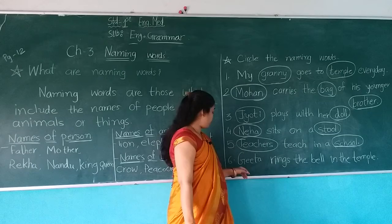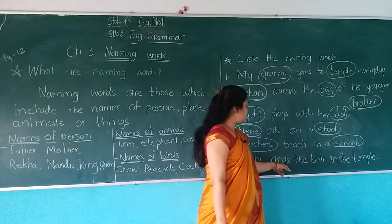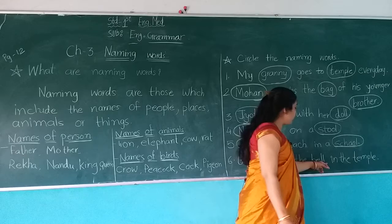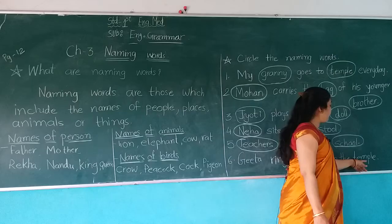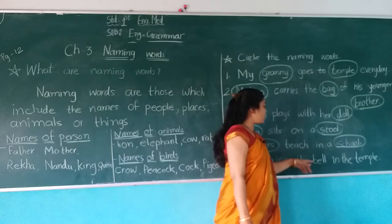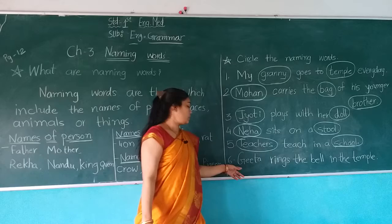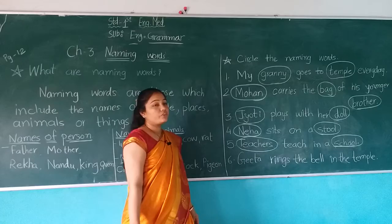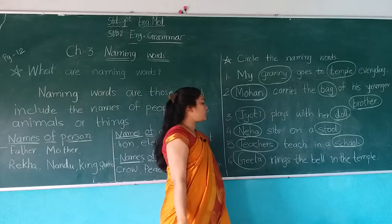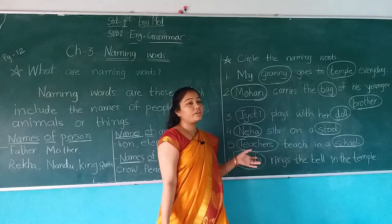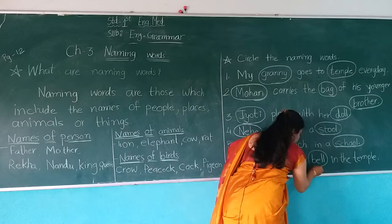Number 6: Geeta rings the bell in the temple. Geeta is a name of a person, so we do a circle on Geeta. Then another noun used here is bell — bell is a name of a thing, so we do a circle on bell. And another naming word is temple — temple is a name of a place.